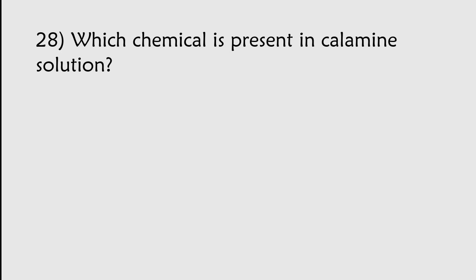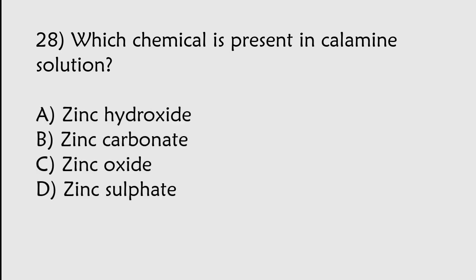Which chemical is present in calamine solution? Zinc hydroxide, Zinc carbonate, Zinc oxide, Zinc sulfate. The correct answer is option C. Zinc oxide chemical is present in calamine solution.